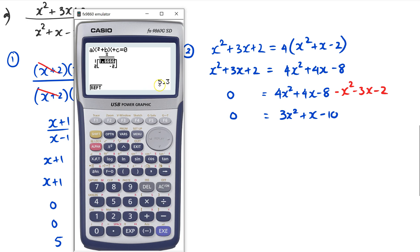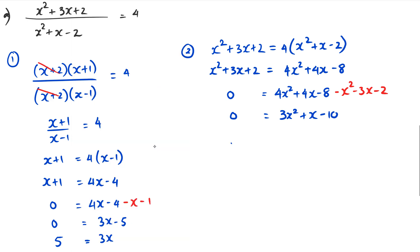As you can see, there are two answers: 1.6666…, which is the same as 5/3 — you can see 5/3 as a fraction in the bottom right of the calculator screen — and then the second answer is negative 2. So our two answers are x = 5/3 or x = −2.